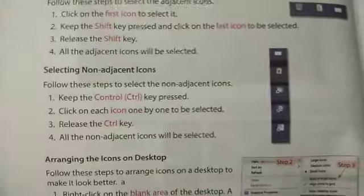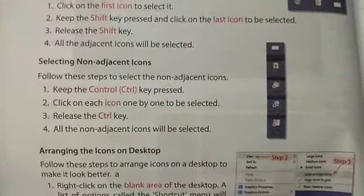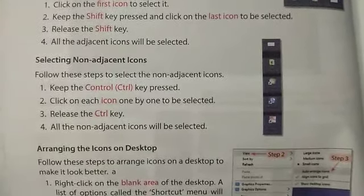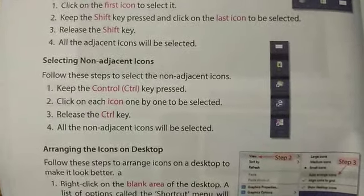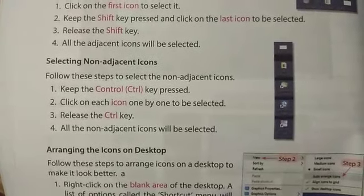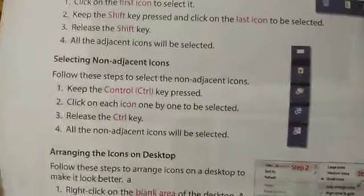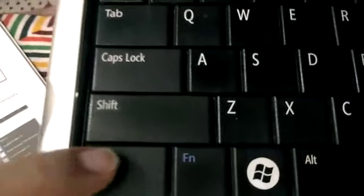Selecting non-adjacent icons. Follow these steps to select the non-adjacent icons. Number one: keep the Control key pressed. Click on each icon one by one to be selected — that means you have to keep pressing this Control key. Number two: release the Control key — all the non-adjacent icons will be selected. Let's see how. As given in step number one, keep the Control key pressed — here is the Control key pressed.